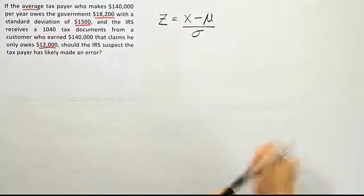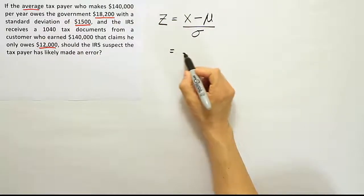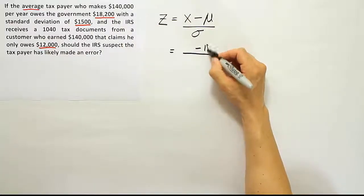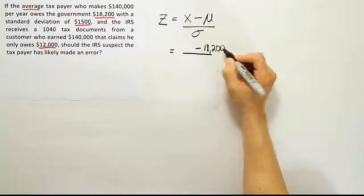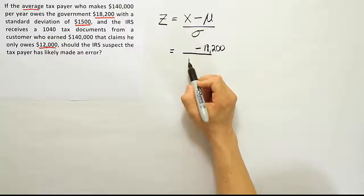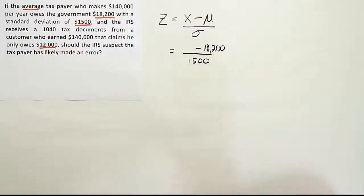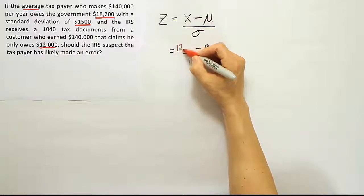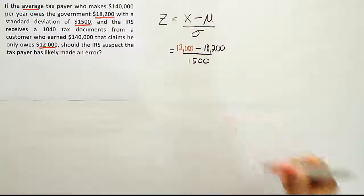Let's fill in the information for our Z-score formula. So again, I know the mean is $18,200, and I know the standard deviation is $1,500, and the value I want to convert into a Z-score is the $12,000. So enter those values in, and we'll see what we get.